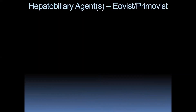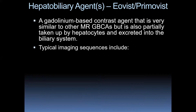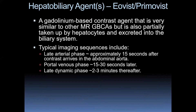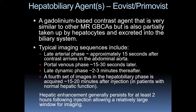Let's talk about hepatobiliary agents — Eovist and Primovist. These are gadolinium-based contrast agents very similar to other MR gadolinium agents but also partially taken up by hepatocytes and secreted into the biliary system. Typical imaging sequences include late arterial phase, portal venous phase, and late dynamic phase — like regular gadolinium — plus a fourth set of images in the hepatobiliary phase about 15–20 minutes after injection in patients with normal hepatic function. Hepatic enhancement generally persists for about two hours following injection, providing a relatively large window for imaging.